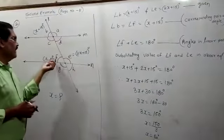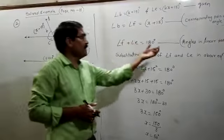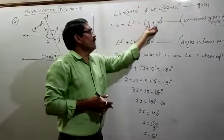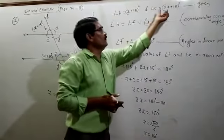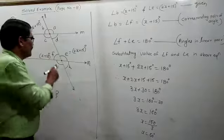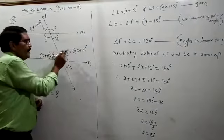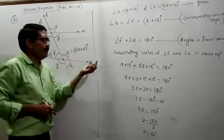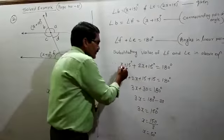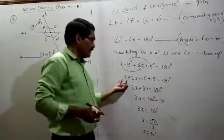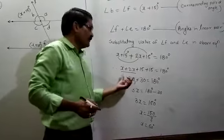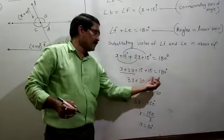Angle F plus angle E equals 180 degrees because they are a linear pair of angles — they form a straight angle together. Substituting: angle F equals x plus 15 degrees and angle E equals 2x plus 15 degrees. So, x plus 15 plus 2x plus 15 equals 180 degrees. Collecting x terms and numeric terms: x plus 2x equals 3x, and 15 plus 15 equals 30. So 3x plus 30 equals 180 degrees.